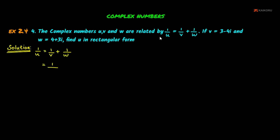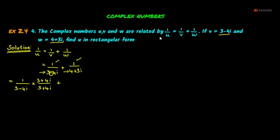Substituting: 1/V gives 1/(3 minus 4i), plus 1/W gives 1/(4 plus 3i). For the first fraction, we multiply numerator and denominator by the conjugate 3 plus 4i, giving (3 plus 4i) divided by (3 minus 4i)(3 plus 4i).